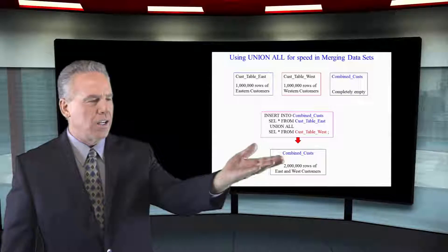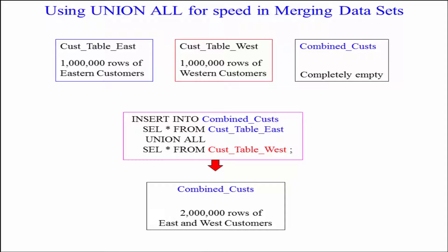I've got a couple of tables with a million rows in them: cust_table_east and cust_table_west. They both have a million rows — two million rows total. If management said they'd like all of that information in one table, we'll call it combined_custs. They have the same columns, so let's make that happen.